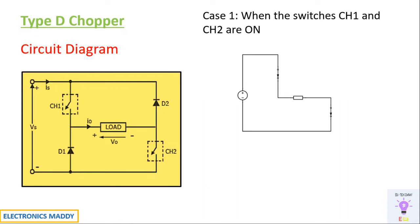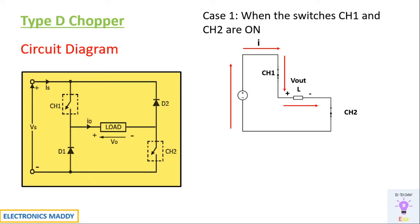When CH1 and CH2 are on, it acts as a short circuit and is represented in this particular fashion. The nature of load we are considering is inductive. In this scenario, DC supply current starts flowing through the circuit. The inductor starts storing energy, as indicated by the plus and minus shown, and the output voltage will be positive.